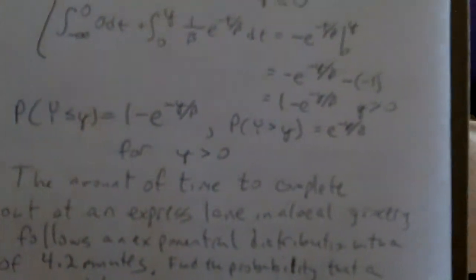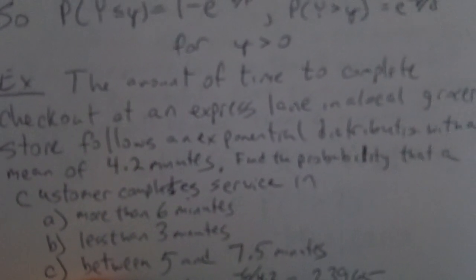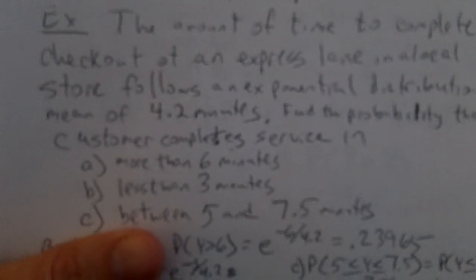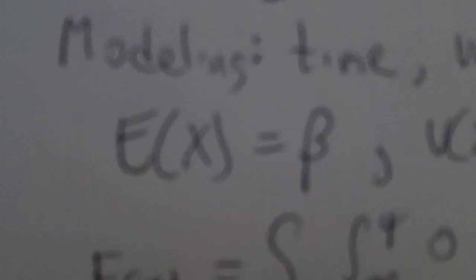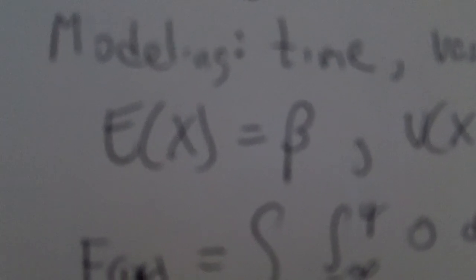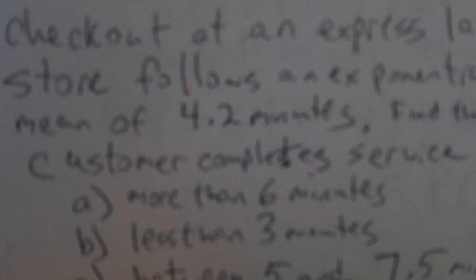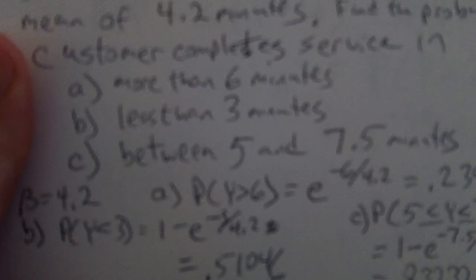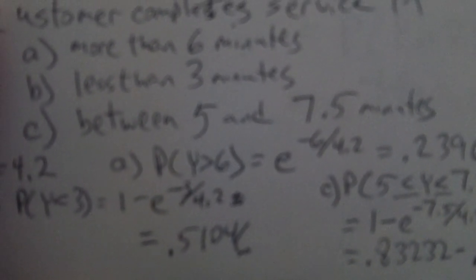Here's an example where we're looking at the amount of time to complete checkout in an express lane at a grocery store. It follows an exponential distribution with a mean of 4.2 minutes. Since the mean of an exponential equals beta, that tells us beta = 4.2. We have three probabilities to calculate: the probability it takes more than 6 minutes, less than 3 minutes, and between 5 and 7.5 minutes.